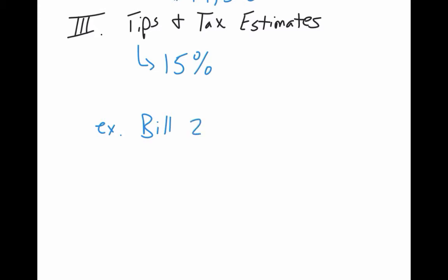All right, the very last thing, Roman numeral three, is probably the one you'll use more often in life. So tips and tax estimates. This is you're at a restaurant, there's a server, you're supposed to give a 15% tip. How do you figure out what percent to give them approximately? So if you have a tip, usually people consider 15%, if your waiter or your waitress is good, give them a 15% tip. If they're awesome, you're talking about like 18, 20%. So something like that for tips. So example, let's say the bill is $23.80.